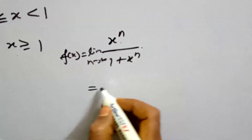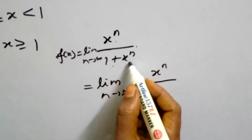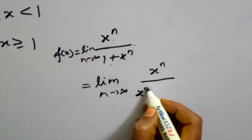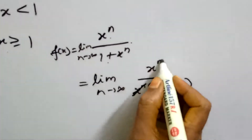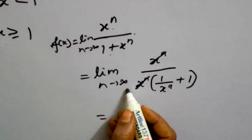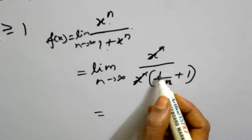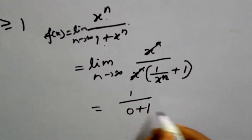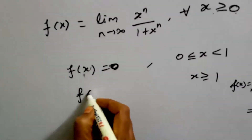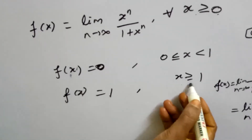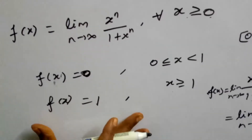Let's calculate: n→∞, xⁿ/(1 + xⁿ). Divide numerator and denominator by xⁿ: this gives 1/(1/xⁿ + 1). As n→∞, 1/xⁿ → 0, so the limit equals 1/(0+1) = 1. Therefore, for x ≥ 1, f(x) = 1.